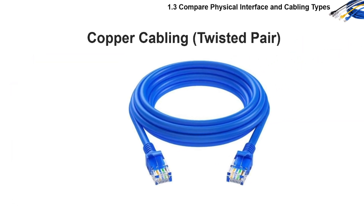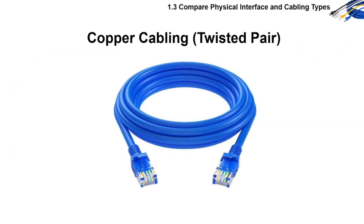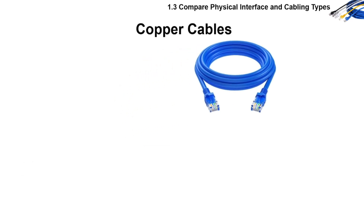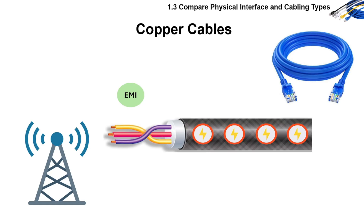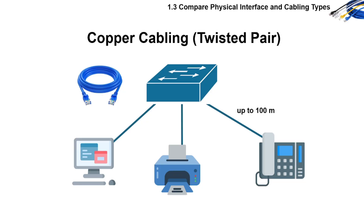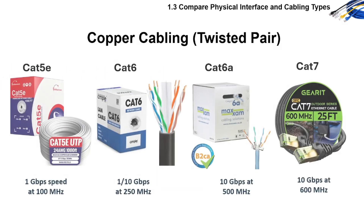Aside from fiber optics, we also use copper cabling, or twisted pair. Copper cables transmit electrical signals and can be disrupted by EMI, leading to slower speeds or data corruption unless shielded. They are used for short-distance, low-cost connections, and the max distance is 100 meters. Copper cables are typically CAT 5E, CAT 6, CAT 6A, or CAT 7.